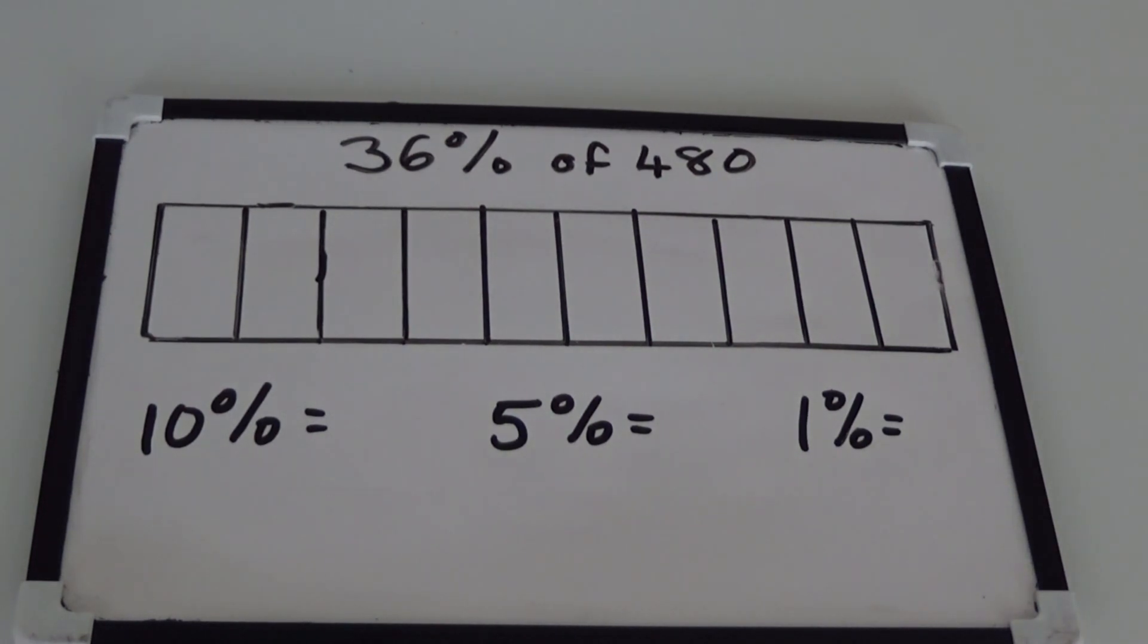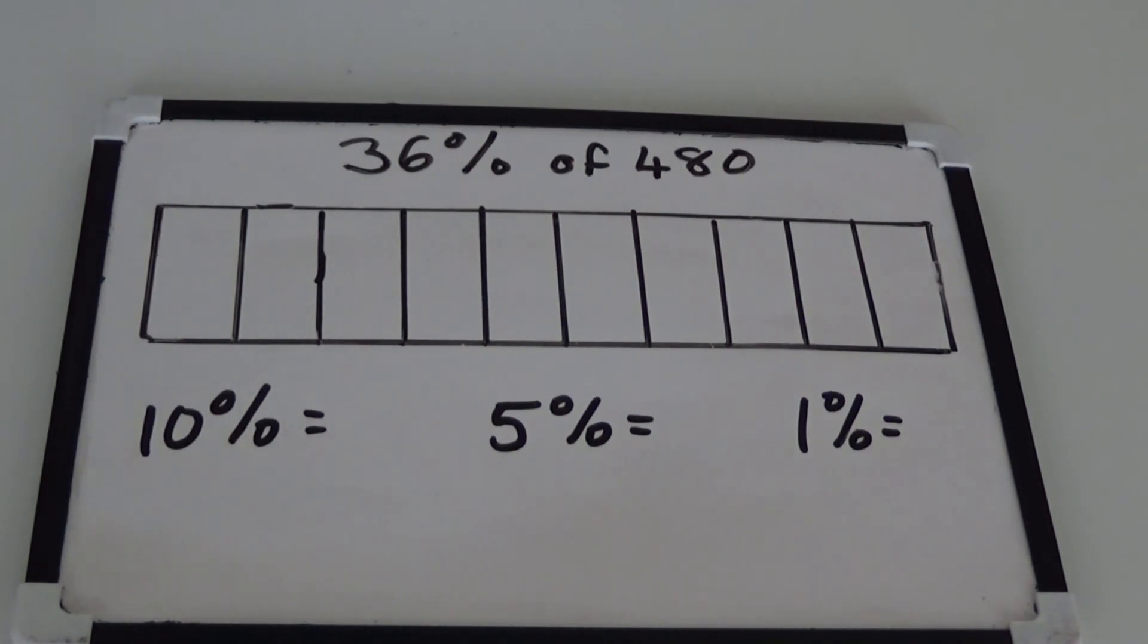To calculate 36% of 480, we are going to start by working out what 10% of 480 is. To work out 10%, we need to divide 480 by 10. This gives us an answer of 48. I'm going to write that in my bar model next to 10%.